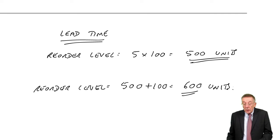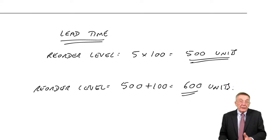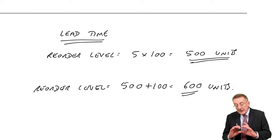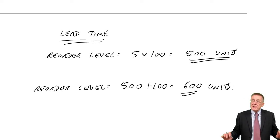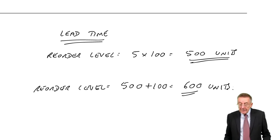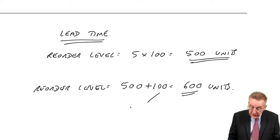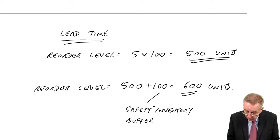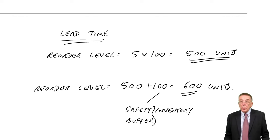And so when the new order comes in, on average, we still have 100 units left there. But it's nice to have that extra 100 units throughout the year, just in case something goes wrong. That extra 100 is called the safety inventory or less common with another word, it's the buffer inventory.